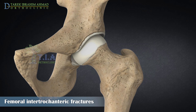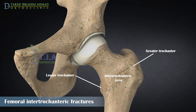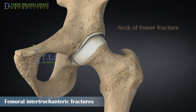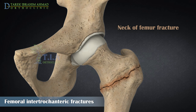The femur has two trochanters, the greater and lesser trochanters. They are bony processes on the upper part of the thigh bone near its joint with the hip bone, and they serve as a site for muscle attachment. Intertrochanteric fractures are common fractures of the proximal femur at the level of the greater and lesser trochanters.